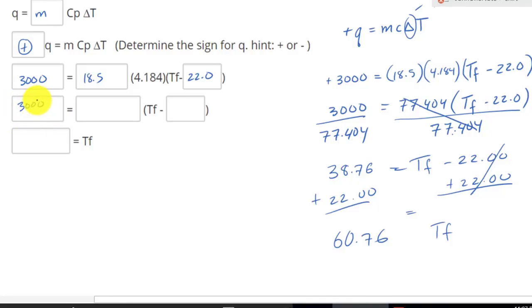And then over here, we have what? The same value as 3000 joules. And we have simplified the equation by multiplying these two numbers. We have 77.404. And Tf again, minus Ti, which is 22.0. And we have Tf minus your Ti, which is 22.0. And lastly, we did the math. Simplify this equation to solve for Tf. We have Tf equal to 60.76. And there you go.